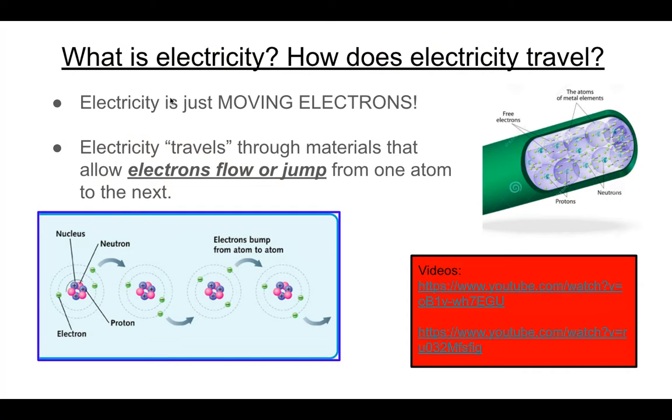Okay, so electricity is literally just moving electrons. So we talked about atoms and protons and neutrons and electrons back in chemistry. And if we look, here's an example of one atom. And in some materials, the electrons in the outer shells can actually jump from atom to atom to atom. And when that happens, you start getting this flow of electrons through the material. That's what electricity is. So electricity is just moving electrons. Electricity travels through materials that allow electrons to flow or jump from one atom to the next.